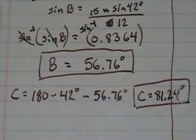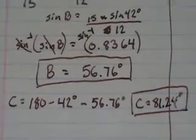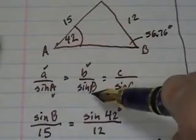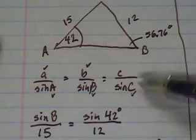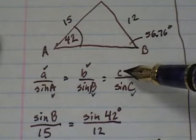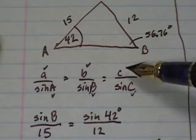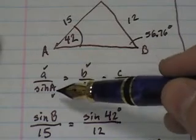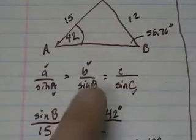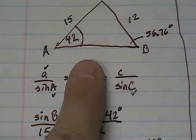And then I go back up to my original equation. Now I know angle B. Now I know angle C. The only thing left is side c. And because I was given a and angle A in the problem, I'm going to use this equation to solve for side c.